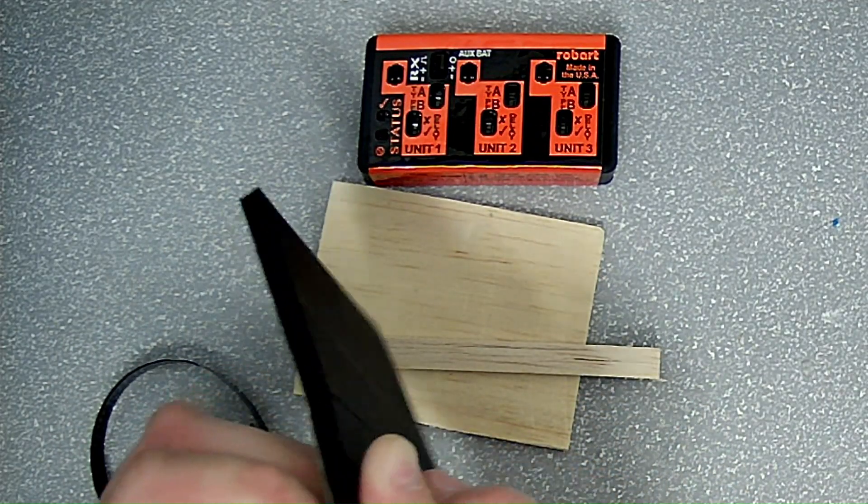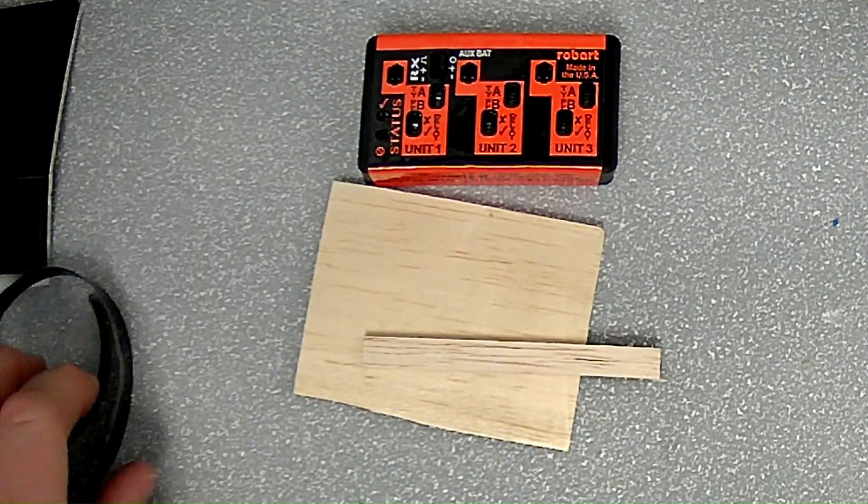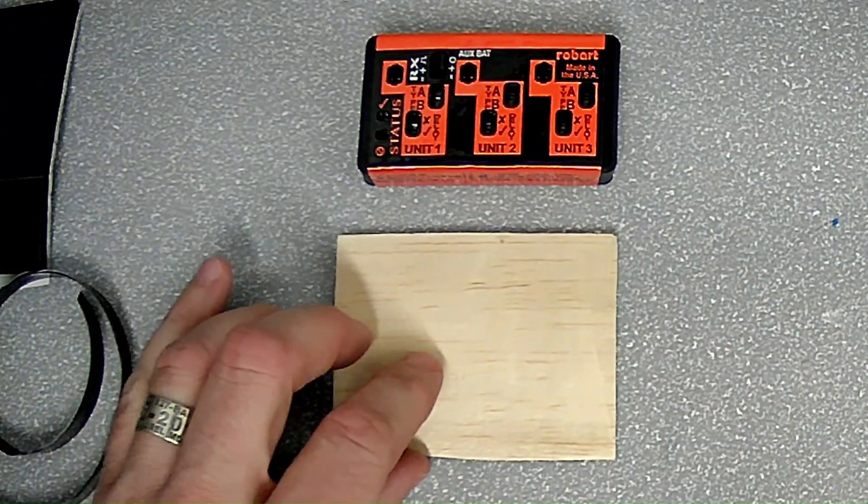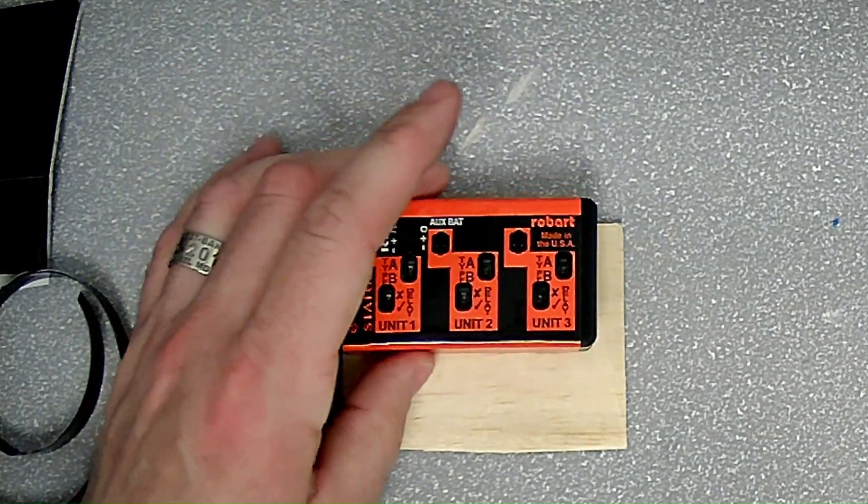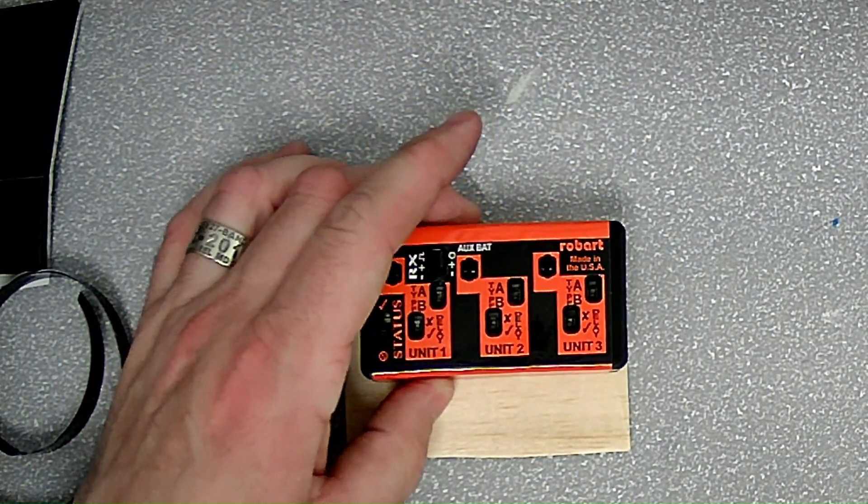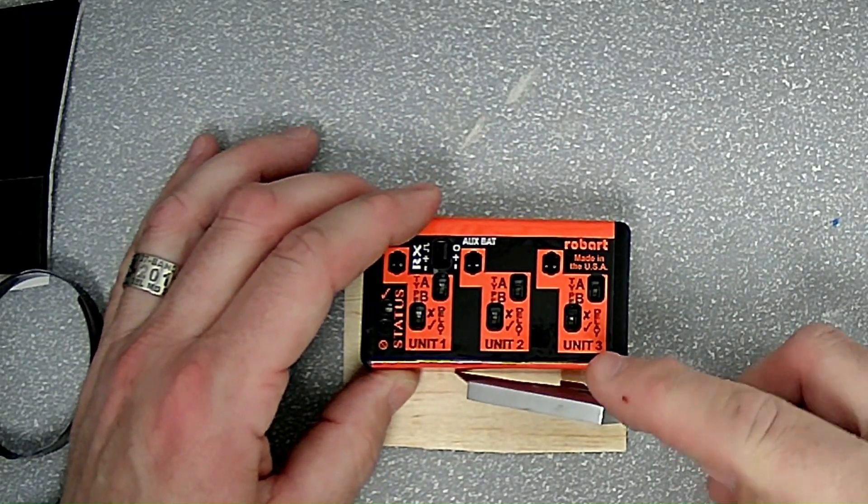Let's go ahead and build us a control box mounting pad. First off, I'm going to mark with my knife my balsa.